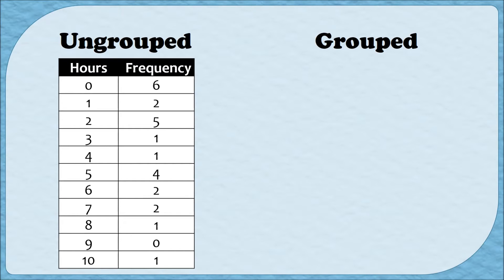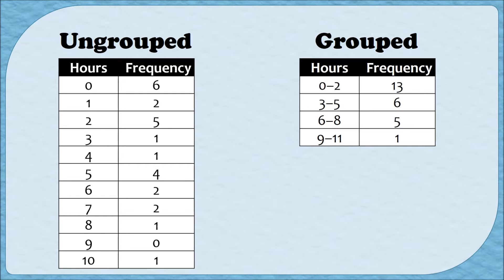In a grouped frequency distribution, the categories are intervals — they're no longer individual values. So in this example, we have from zero to two hours, three to five hours, six to eight hours, and nine to 11 hours.